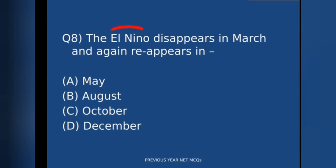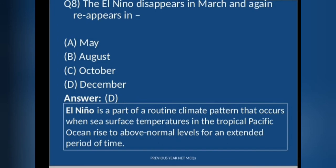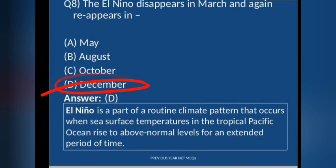The 8th question: El Niño disappears in March and again reappears in which month? El Niño is a routine climate pattern that occurs when sea surface temperatures in the tropical Pacific Ocean rise to above-normal levels for an extended period of time. When it disappears in March, it reappears in the month of December.